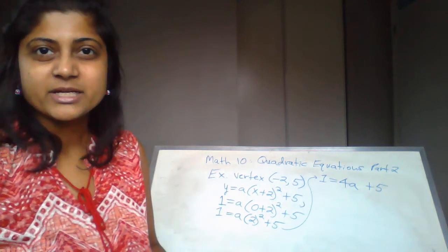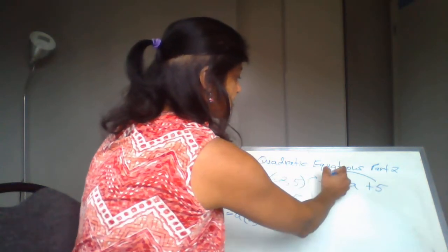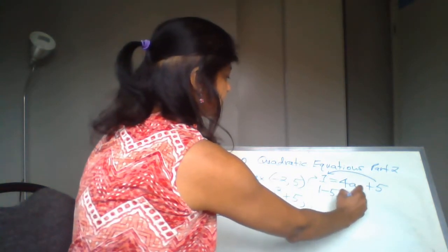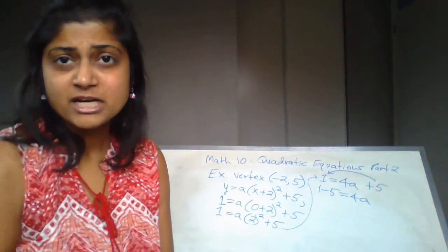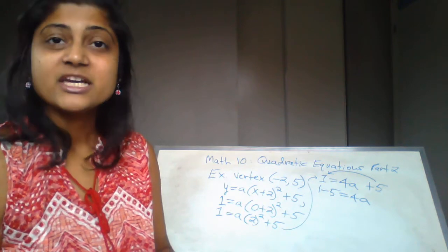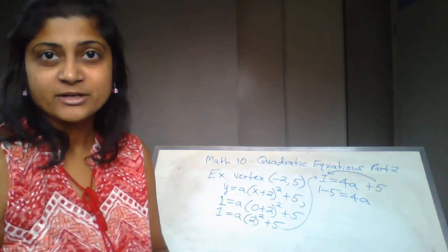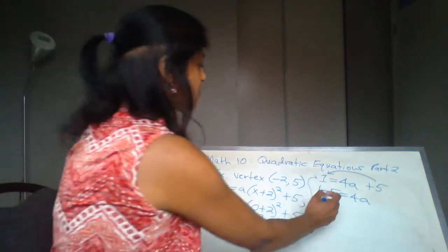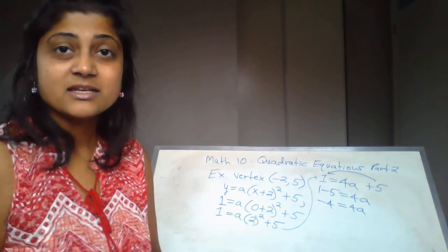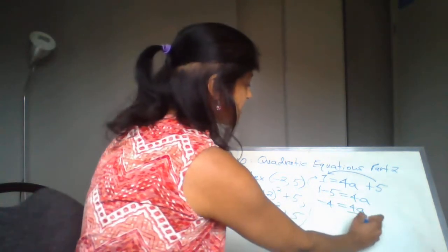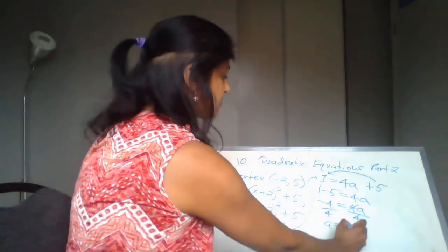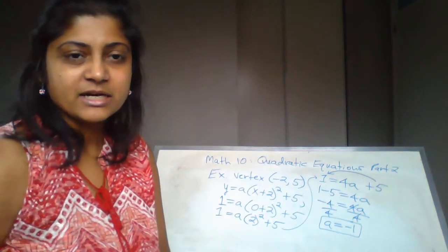So 1 = 4a + 5. I'm going to take the positive 5 to the other side and subtract: 1 - 5 = 4a. Remember, if you get a fraction for the value of a, don't worry — if the fraction is less than 1 it indicates a vertical compression. Doing 1 - 5 gives negative 4, so: -4 = 4a. Dividing by 4 on both sides: a = -1.